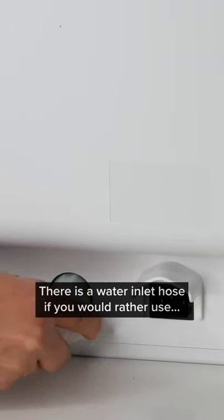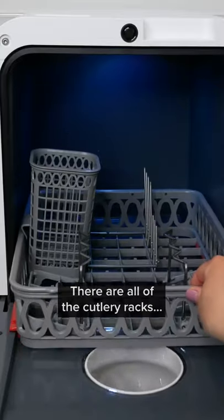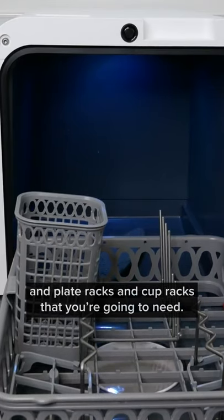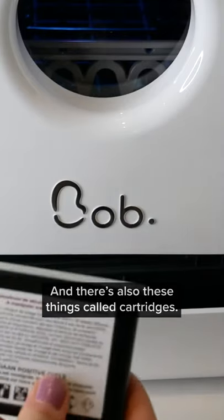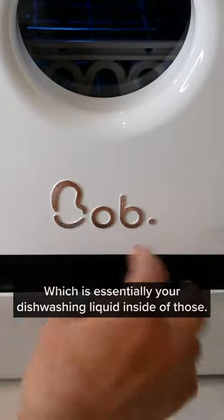There is a water inlet hose if you would rather use that from say a faucet instead of the built-in water tank. There is also a drainage pipe. There are all of the cutlery racks and plate racks and cup racks that you're going to need, and there's also these things called cartridges which is essentially your dishwashing liquid inside of those.